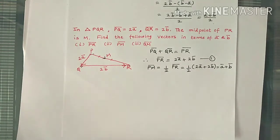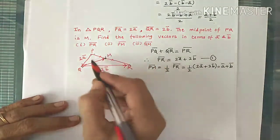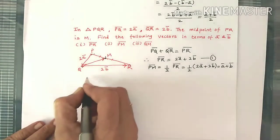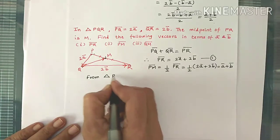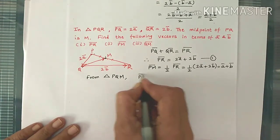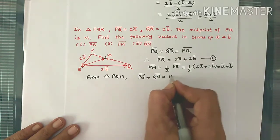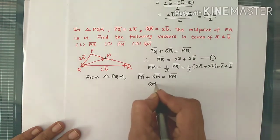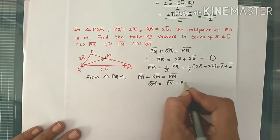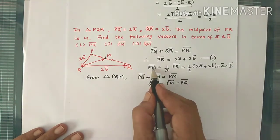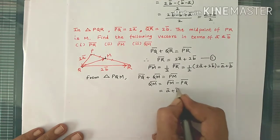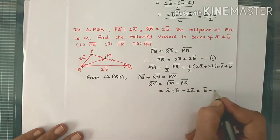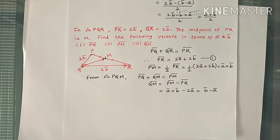Next is QM bar. Consider the triangle: P to Q, Q to M, so P to M. We already have PQ bar and PM bar. From the triangle, PQ bar plus QM bar equals PM bar. Substituting: QM bar equals PM bar minus PQ bar, which is (A bar plus B bar) minus 2A bar. So this becomes B bar minus A bar. It is really very simple using triangle law of addition.